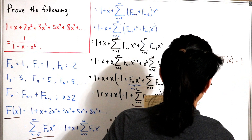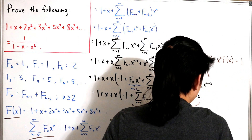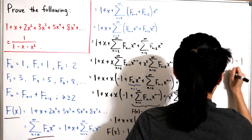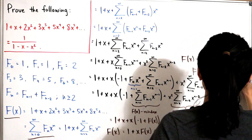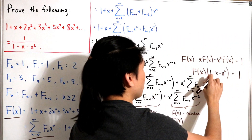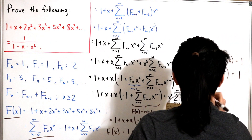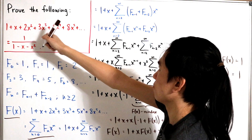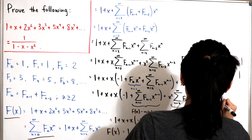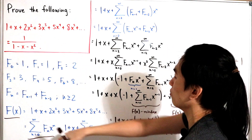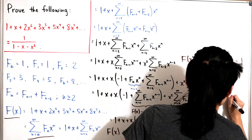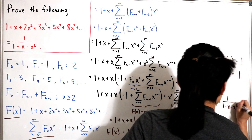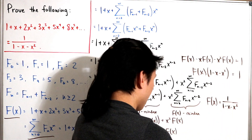Factoring out F(x) gives F(x)·(1 − x − x²) = 1. Dividing both sides by (1 − x − x²), we are done: F(x) = 1/(1 − x − x²). We have proven that the generating function equals the given closed form.